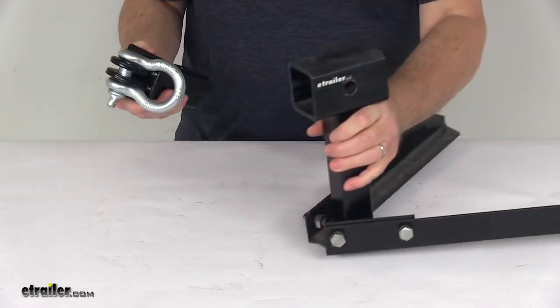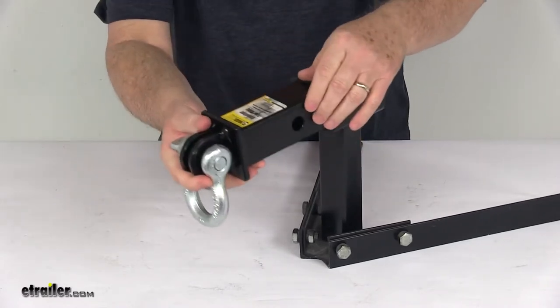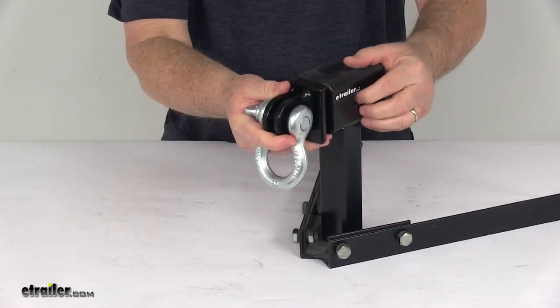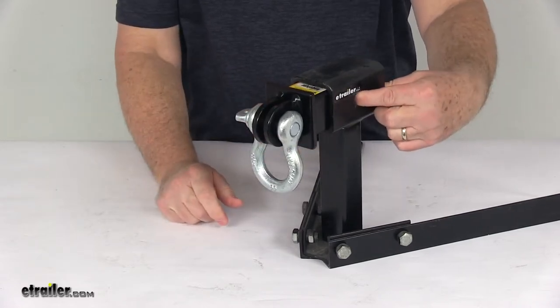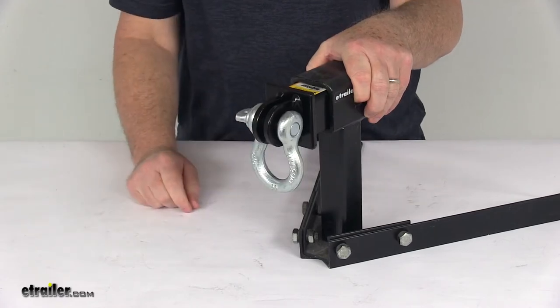And I just want to show you, I have an example here of what a 2-inch hitch receiver opening would look like. You got your hitch pin hole right here so all you have to do is slide that in, line up your hitch pin hole, put your hitch pin and clip or lock through there, and you'll be all locked in ready to go. Have your loop right at the back of your vehicle.